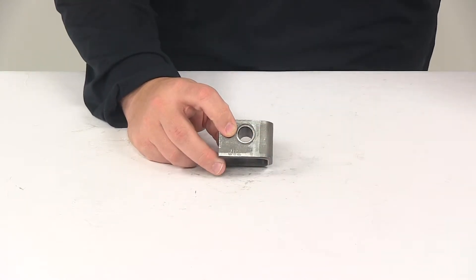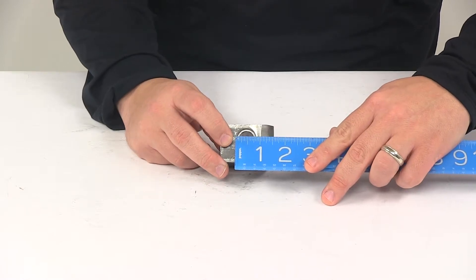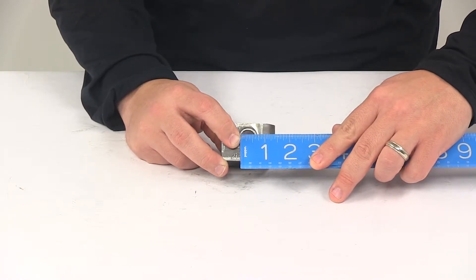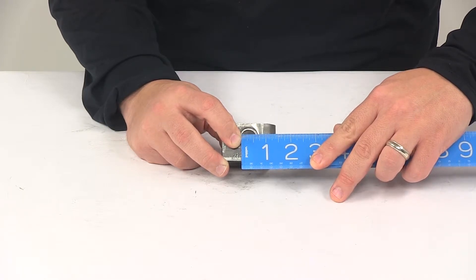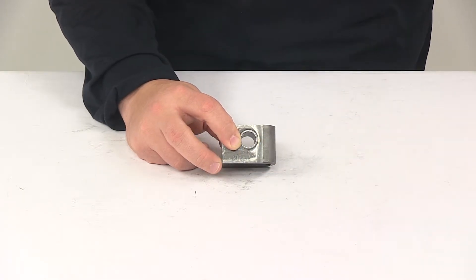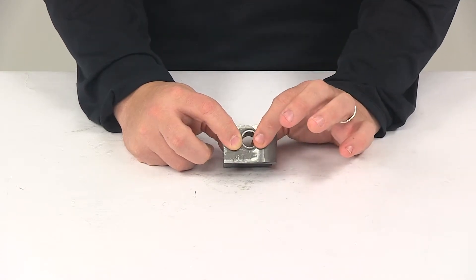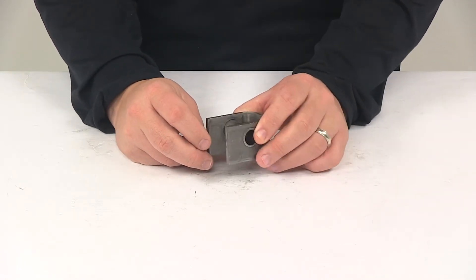If we take a measurement of the diameter of this hole right here, that's going to give us a measurement of right around nine sixteenths of an inch to five eighths of an inch. That tells us that this will work with a nine sixteenth inch diameter bolt. The bolt is sold separately as well.